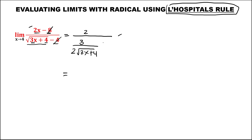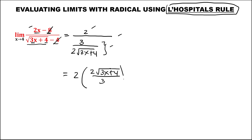This is now the derivative of the given limit. To simplify: if the denominator contains a fraction, we need to get the reciprocal. Copy the numerator and multiply by the reciprocal of the denominator. So we have 2 times the square root of 3x plus 4, then over 3.